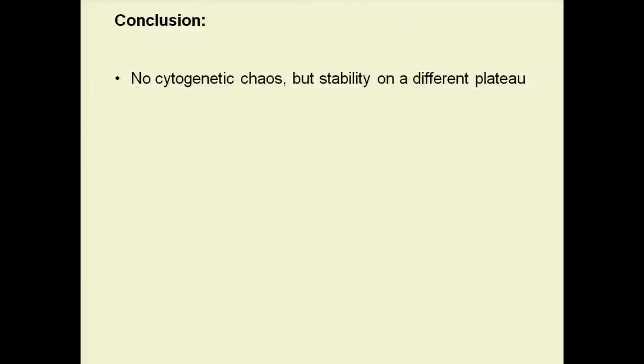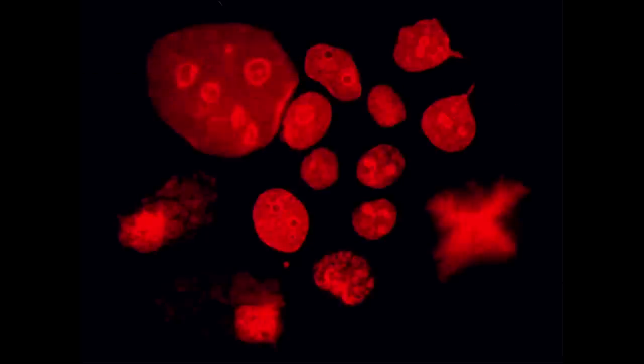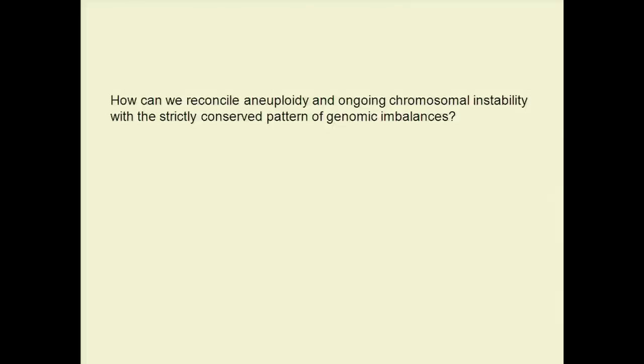Conclusion: we do not have cytogenetic chaos, but rather stability on a different plateau of copy number changes — it's like a speciation. However, we do have the problem of an enormous degree of variability. The question is: how can we reconcile aneuploidy and ongoing chromosomal instability, which is a fact, with a strictly conserved pattern of genomic imbalances that we observe?